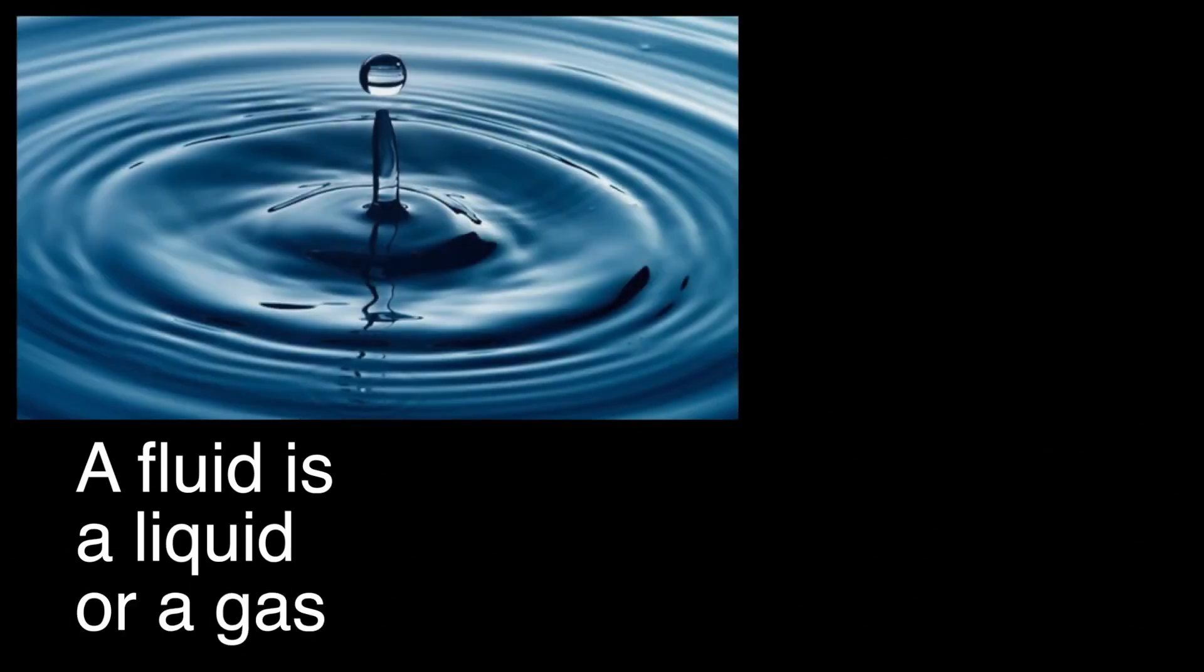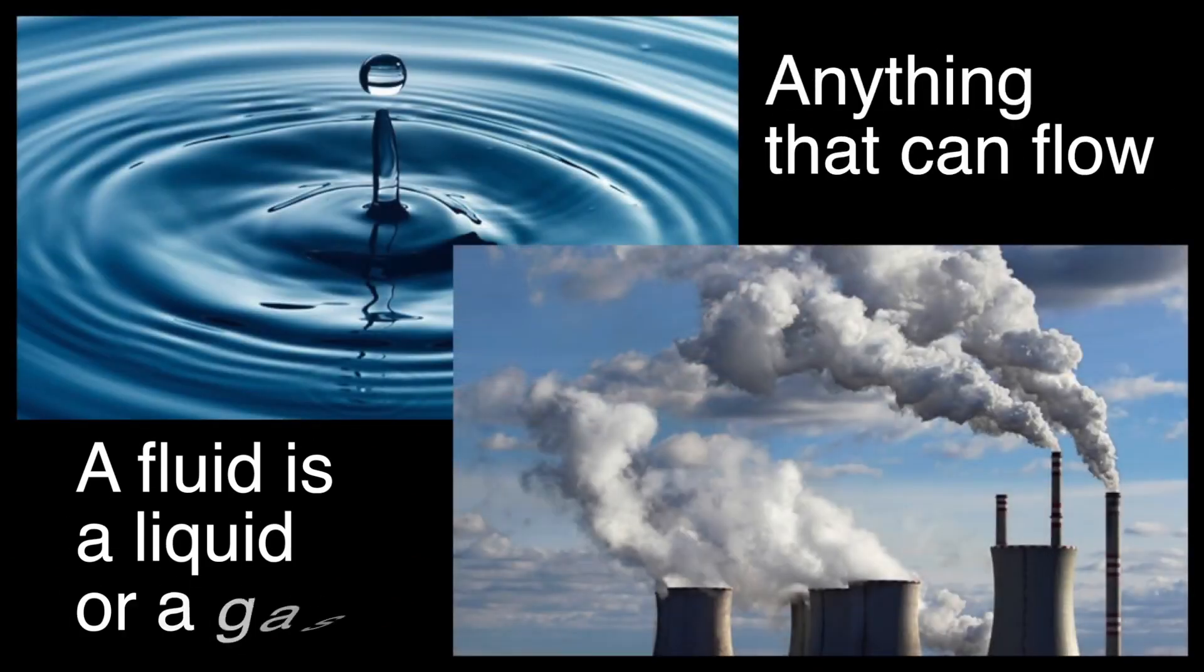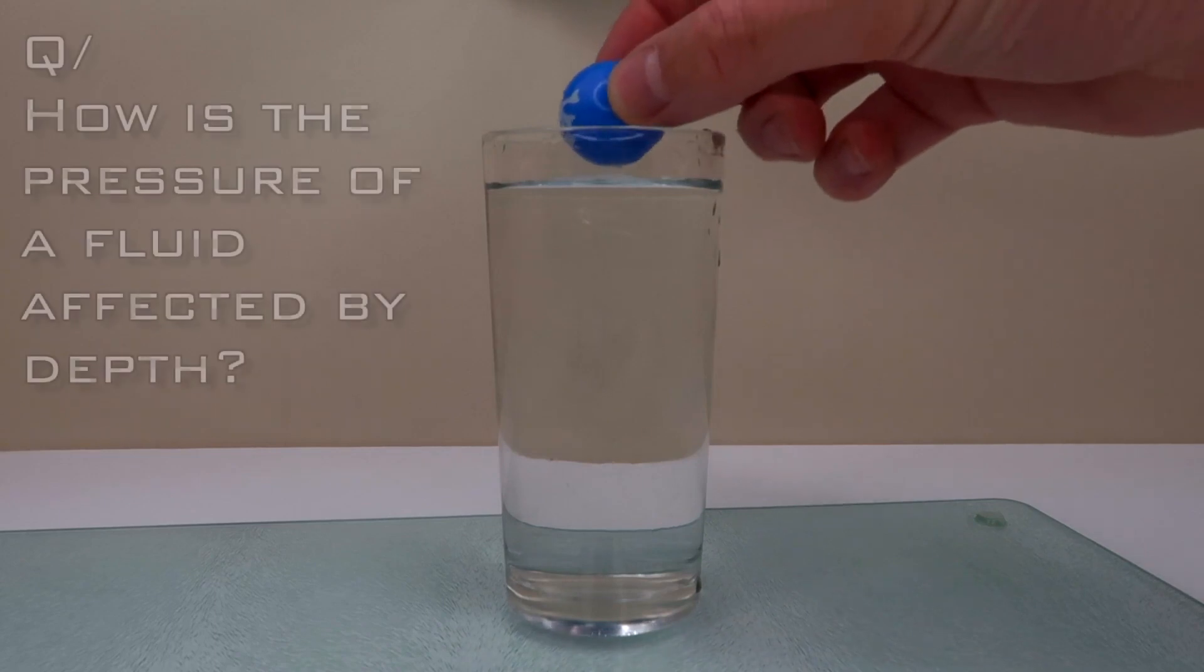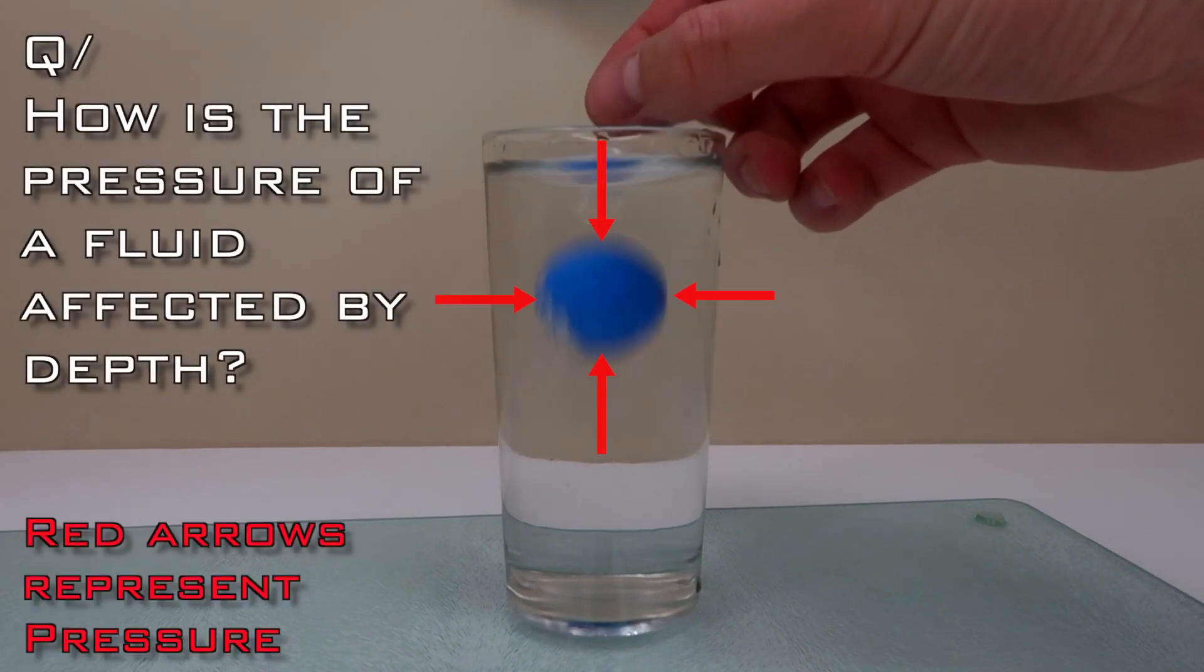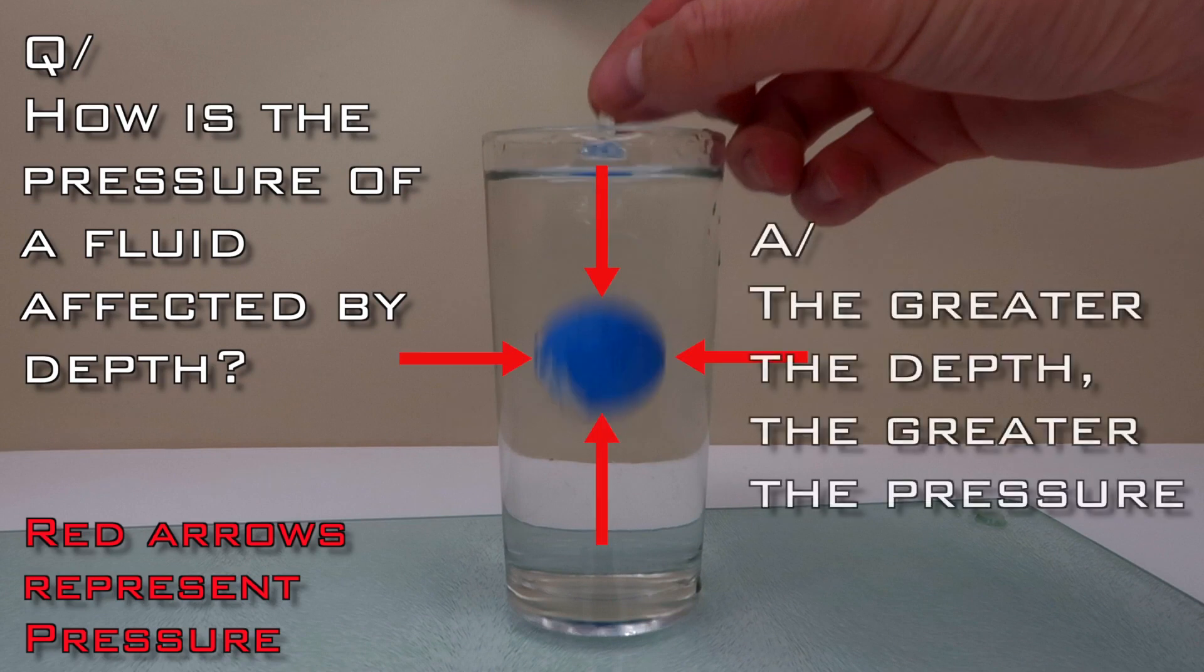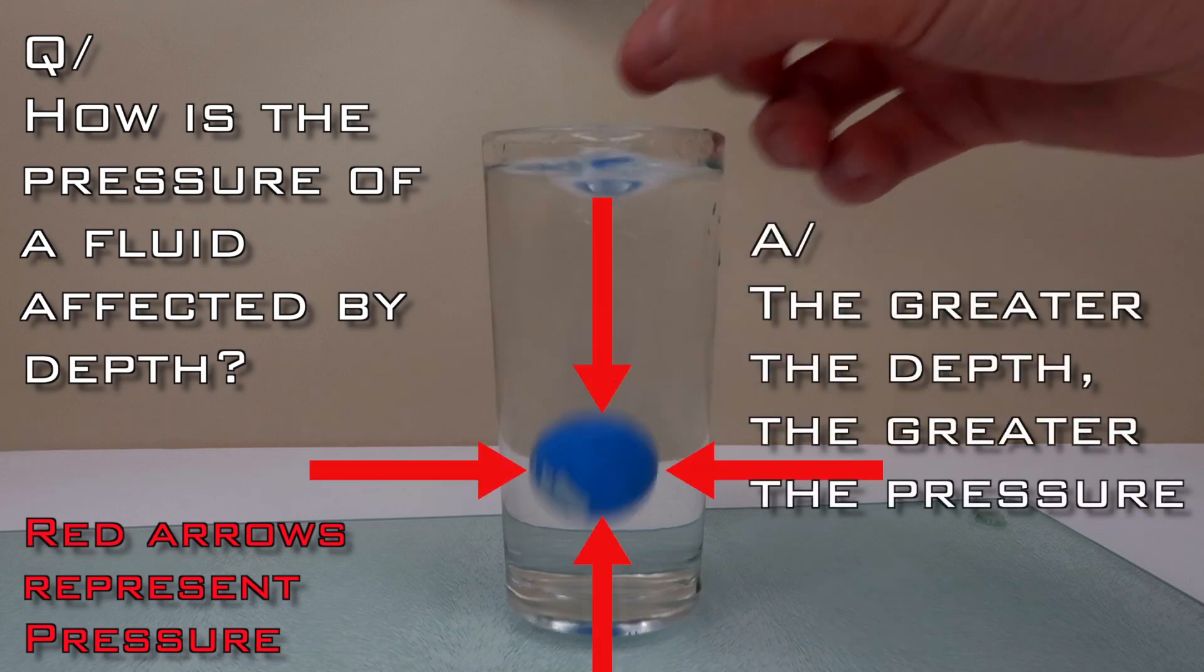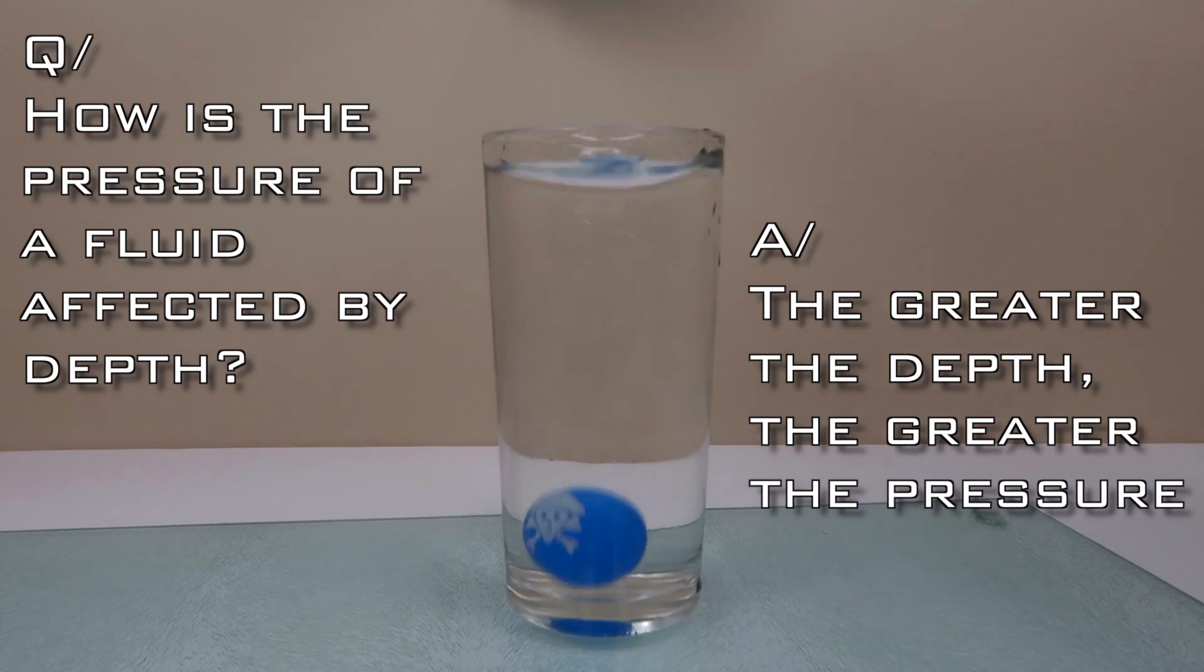A fluid is a liquid or a gas, anything that can flow. How is the pressure of a fluid affected by depth? The greater the depth, the greater the pressure. That is because there is a greater weight of fluid above the object pushing down on it.